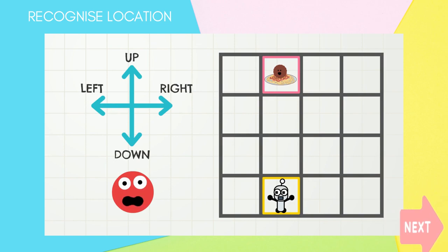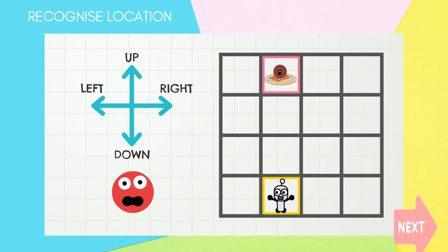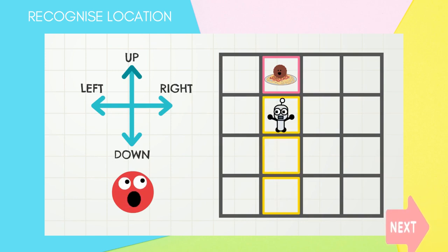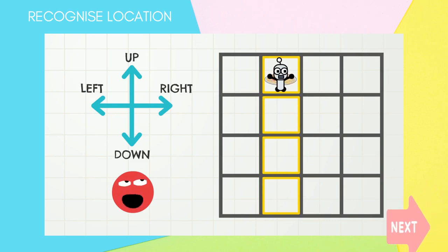We need to tell Tiny Robot how to get to the plate of spaghetti using four directions: up, down, left, and right. We also need to tell Tiny Robot the distance using the number of squares. I think Tiny Robot should go up three squares — one, two, three! Good job, Tiny Robot!